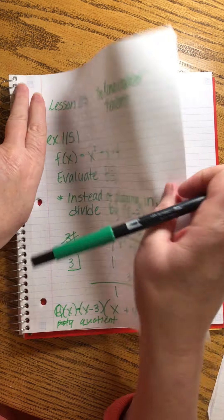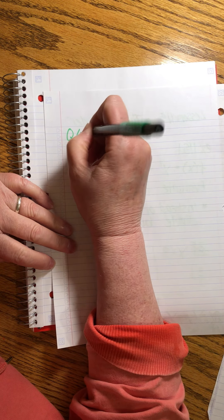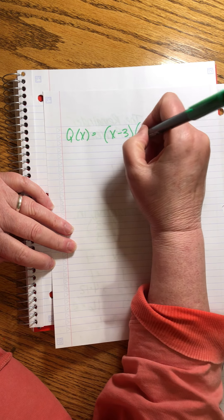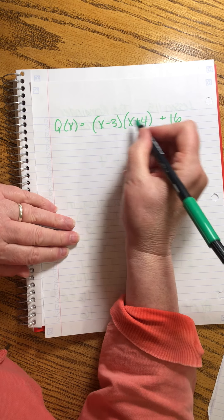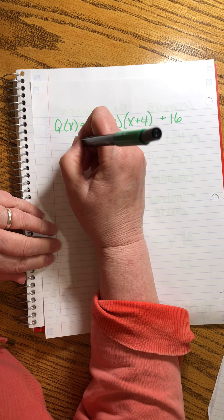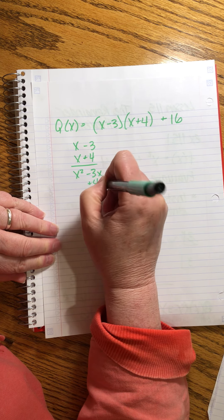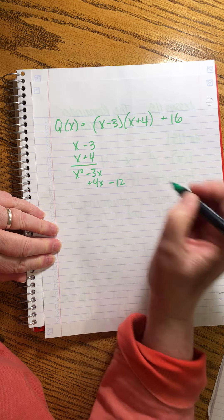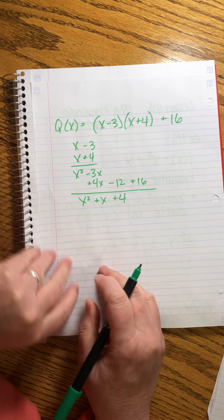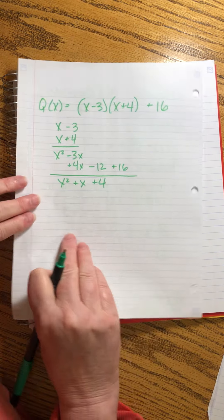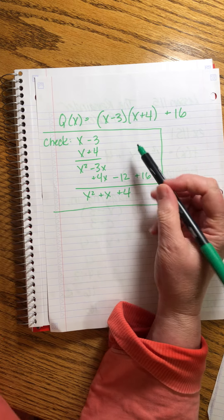Q(x) equals x minus 3 quantity times x plus 4 quantity plus 16. And we could multiply that. In fact, let's just do that to prove that is indeed our right answer. I'm going to copy this to the top of the next page. The Q(x) equals quantity x minus 3, that was what we divided by, times quantity x plus 4, that's what we got when we did our division, plus a remainder of 16 we add on at the end. So let's just check and make sure that this does in fact get us back to our original polynomial. x minus 3 times x plus 4. x² minus 3x plus 4x minus 12 and then plus 16. That is x² + x + 4. Voila. That's what we have.